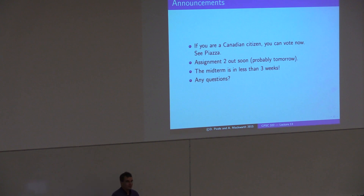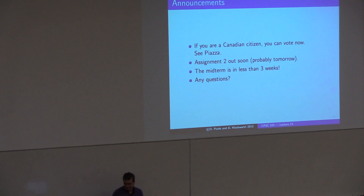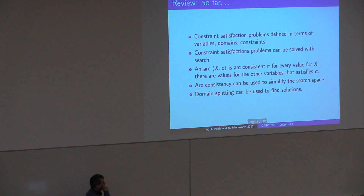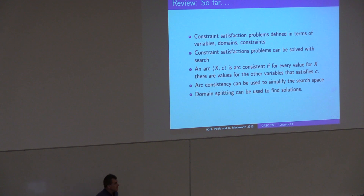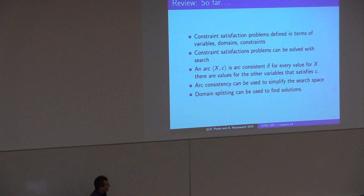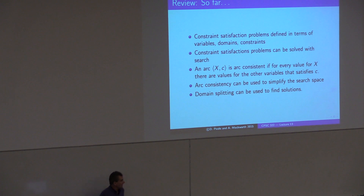Does anyone have any questions before we start? How was Assignment 1? Good, bad — middling, okay. So what we've done so far: we've been looking at constraint satisfaction problems, defined in terms of variables, domains, and constraints. We can solve them with search. Then we looked at arc consistency — arc XC is arc consistent if for every value for X there are values for the other variables that satisfy the constraint. It can be used to simplify the search space, and domain splitting can be used to find solutions given arc consistency.